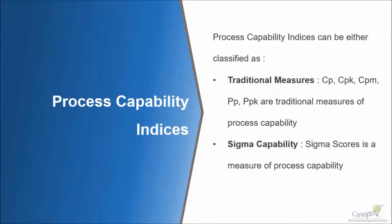Process capability indices can be traditional measures like Cp, Cpk, Pp, Ppk. To that I would add CPM, which we will cover in detail in this lecture.